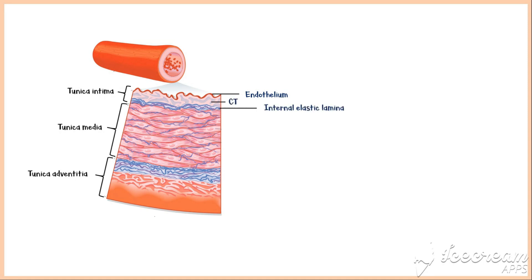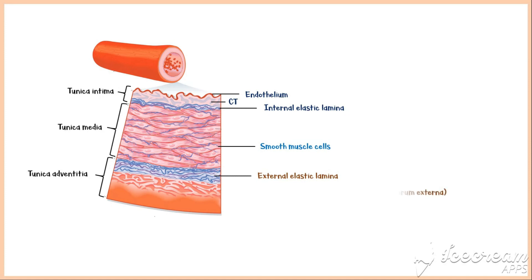Tunica media mainly contains smooth muscle cells. And tunica adventitia consists of the external elastic lamina, connective tissue, nerve fibers, and blood vessels supplying the tunica media, which are known as vasa vasorum.